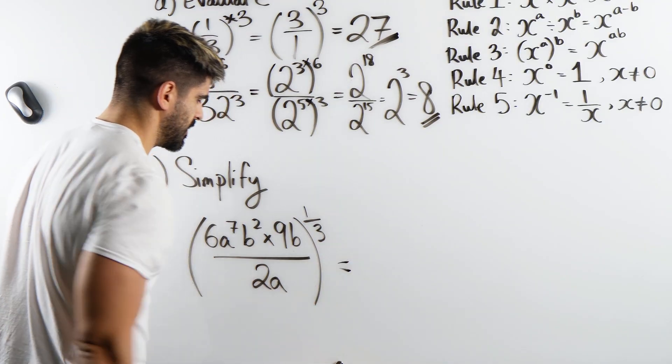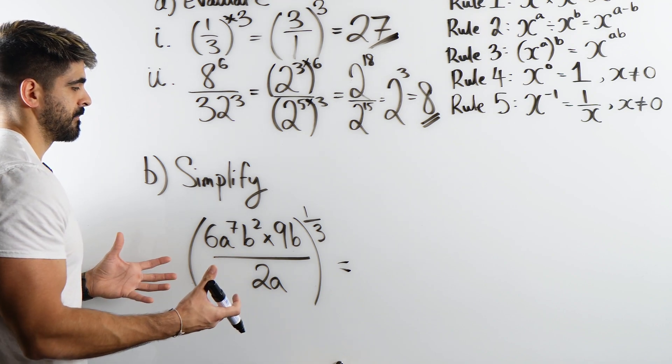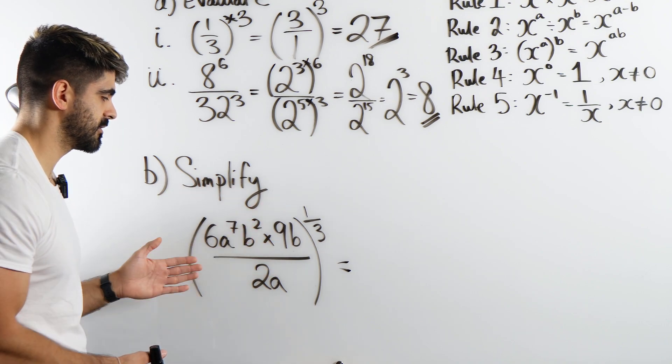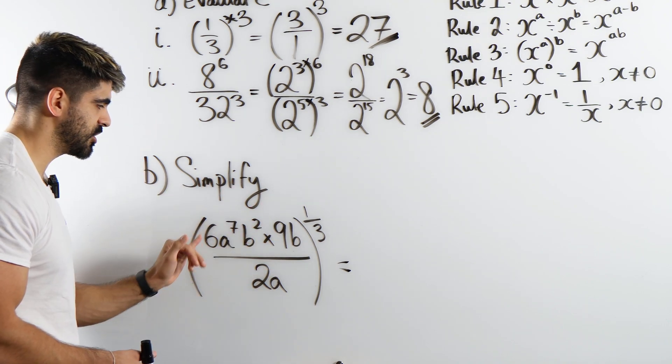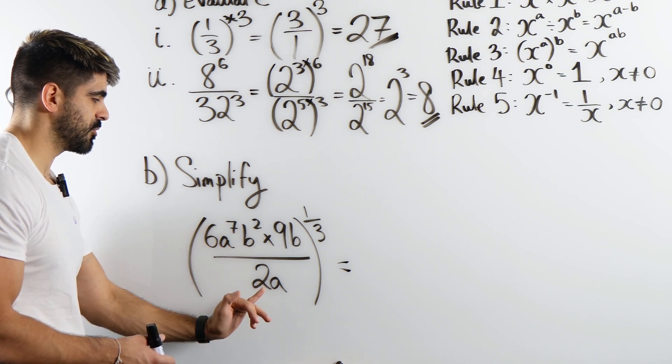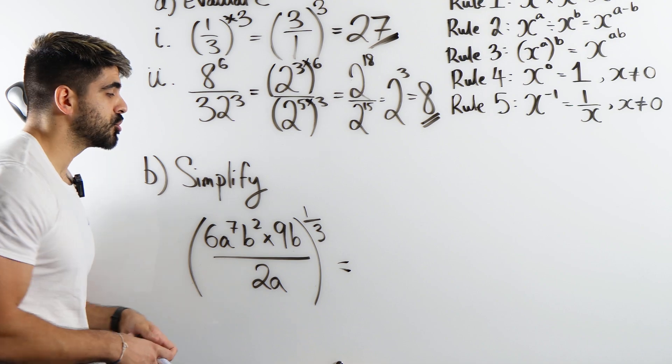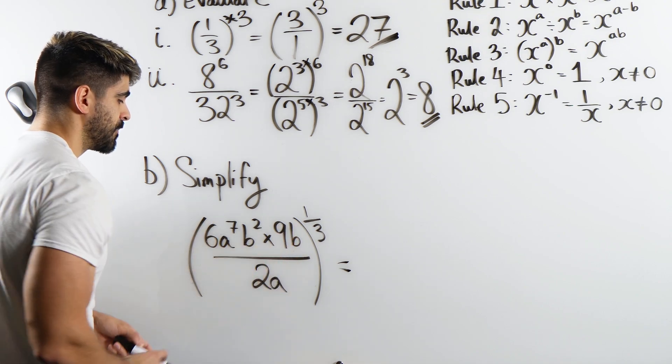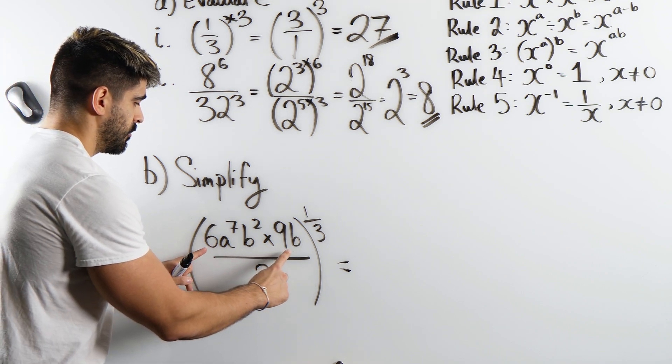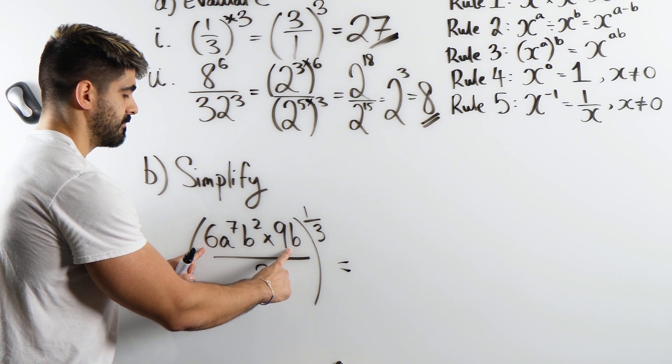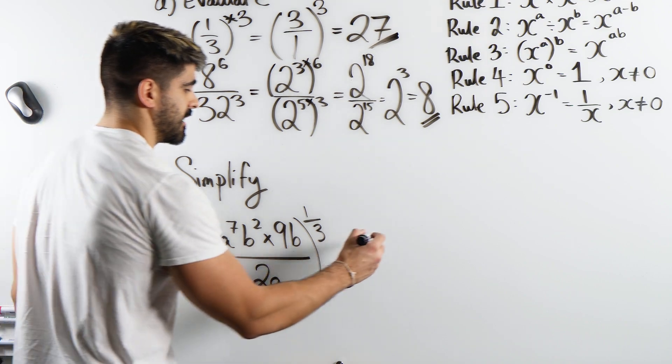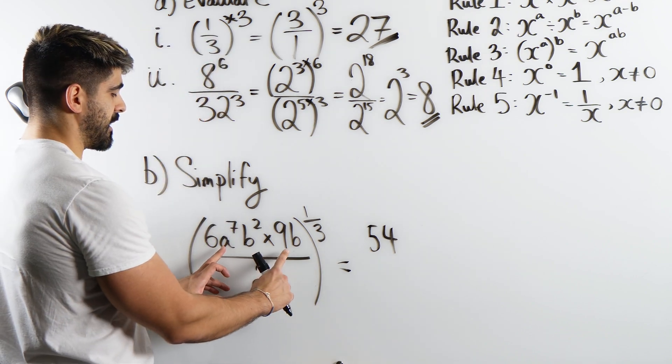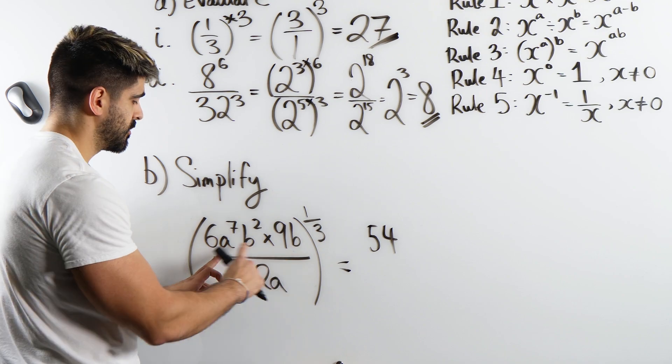So for this question I want to simplify this. A bit of BIDMAS, we're going to evaluate what's inside the brackets first. Now the thing about this is you can actually simplify the 6a and the 2a, but naturally most students would be simplifying what's on the top first because there is like an invisible bracket here. Okay, so how do we do that? When we multiply, we're going to multiply the numbers first. 6 times 9 is 54.